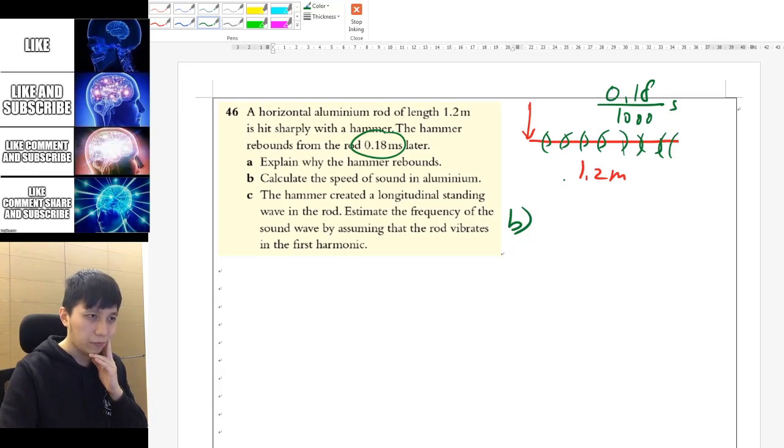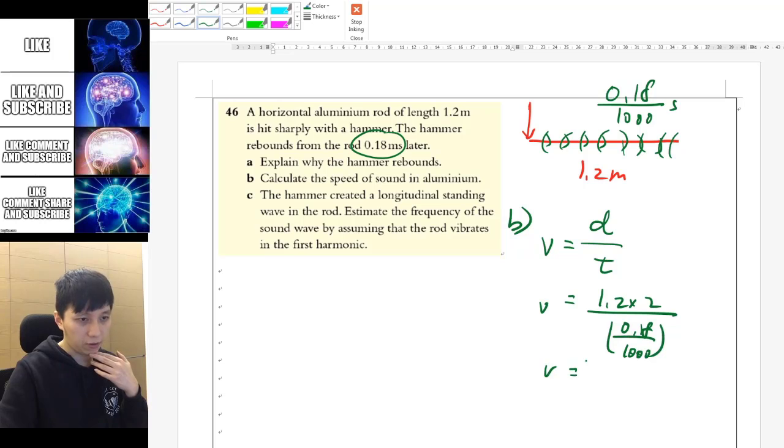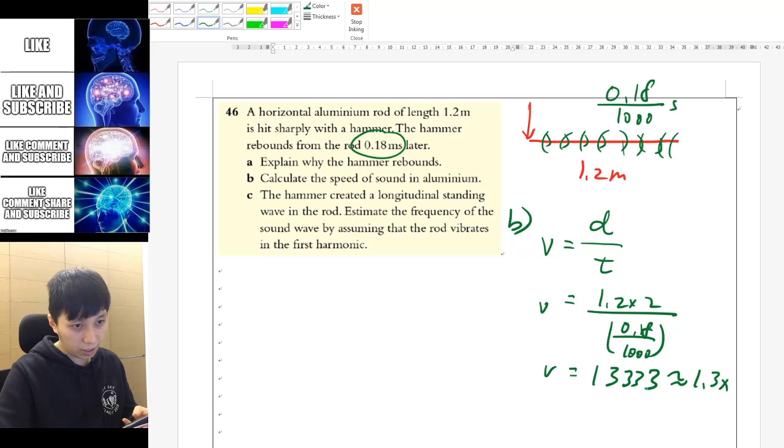Part B, calculate the speed of sound. So this time you don't have to use the wave equation because it's more about the echo. So we just have to know that the distance, because you travel back and forth, it's going to be speed equal distance over time. So the distance is going to be 1.2 times 2. The time is going to be the one that it takes. And then you can find the velocity. So it's going to be 1333.3. I will take two sig figs. So 1.3 times 10 to the power of 4 meter per second. And that makes sense to me.